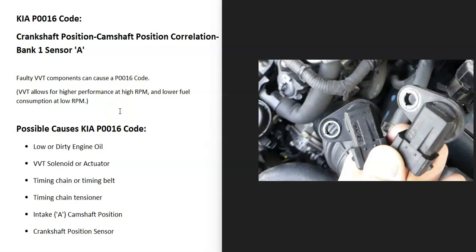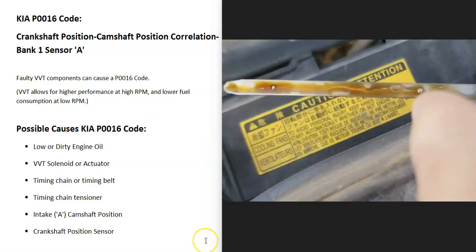One very common problem with the P0016 code is that something is going on inside the variable valve timing. While this code can have different causes, a problem in the variable valve timing is very common. Since oil flows through the variable valve timing, the first thing to do is check the engine oil — be sure it's not low and not really dirty, because low or very dirty engine oil can clog up the variable valve timing and cause issues. So first, go check your engine oil and be sure it looks good.